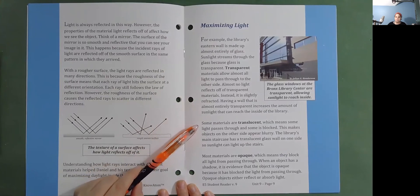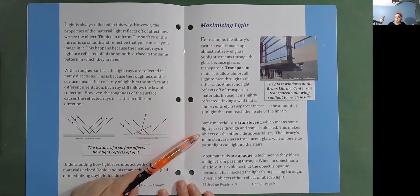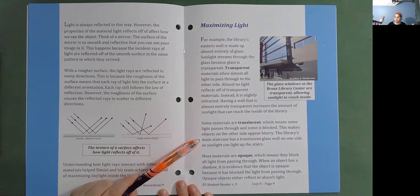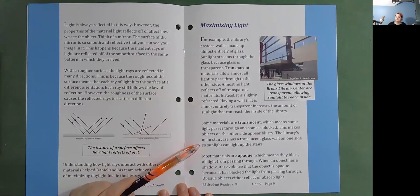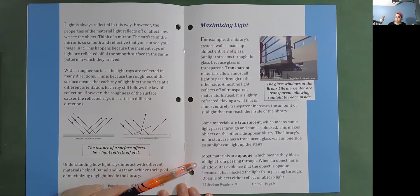Some materials are translucent, which means sunlight passes through and some is blocked. This makes objects on the other side appear blurry. The library's main staircase has a translucent glass wall on one side so sunlight can light up the stairs. Most materials are opaque, which means they block all light from passing through. When an object has a shadow, it is evidence that the object is opaque because it has blocked the light from passing through.